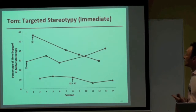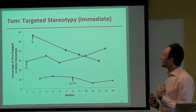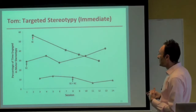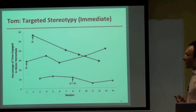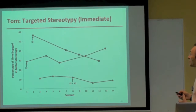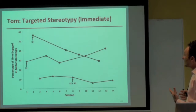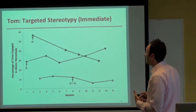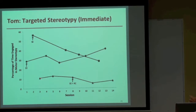For Tom's targeted stereotypy — rocking — there's a decreasing trend in the no-interaction data path. When we introduce an environmentally enriching stimulus, there's an initial reduction but over time an increasing trend, making it seem less effective than doing nothing. But when response cost is added, we see an even more pronounced reduction that is stable across time.